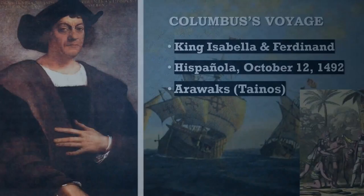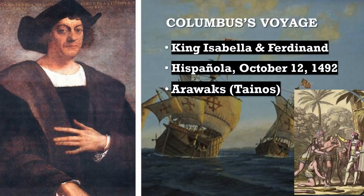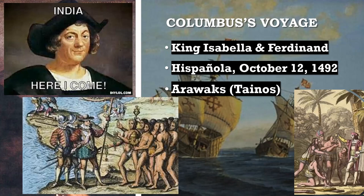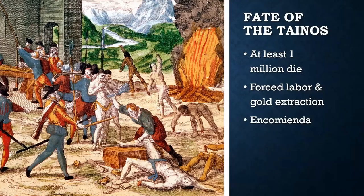Spain's path to becoming a powerful empire began with Christopher Columbus's voyage and subsequent invasion of the island of Hispaniola. His venture, funded by the queen and king of Castile, provided him with three ships in the hope that he would find an alternate route to India, eventually taking Columbus and his crew to Hispaniola on October 12, 1492. There they encountered the Tainos, who populated the Caribbean islands. Columbus returned to Spain with enslaved and branded Tainos, promising to bring back gold and more enslaved people. During Columbus's invasion, it is estimated that at least a million Tainos died. They were subjected to slave labor and ordered to mine for gold; if they did not meet their quotas, they were punished by having their hands, noses, or ears cut off.